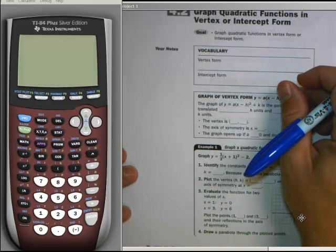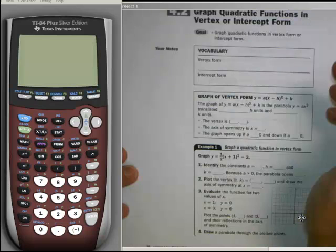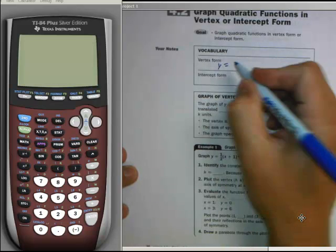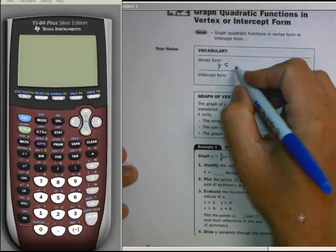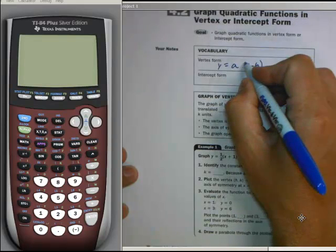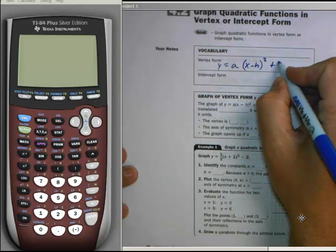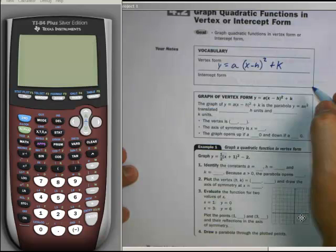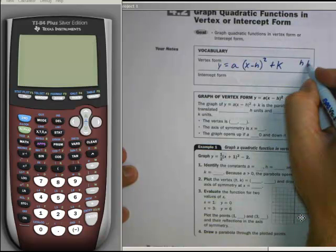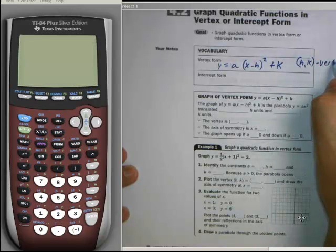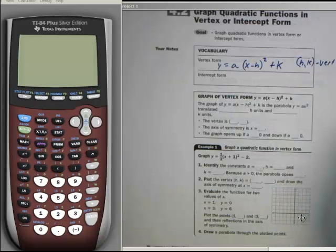The first is the vertex form, and it's very similar to what we learned about in absolute values in that y equals a times x minus h squared plus k. And when we're looking at that vertex, we're again looking at h, k as our vertex.